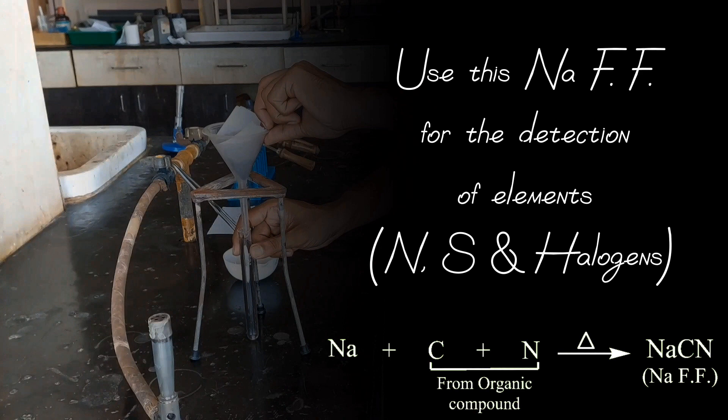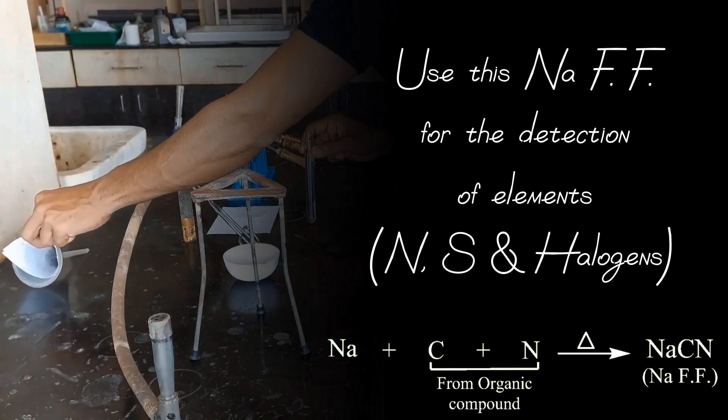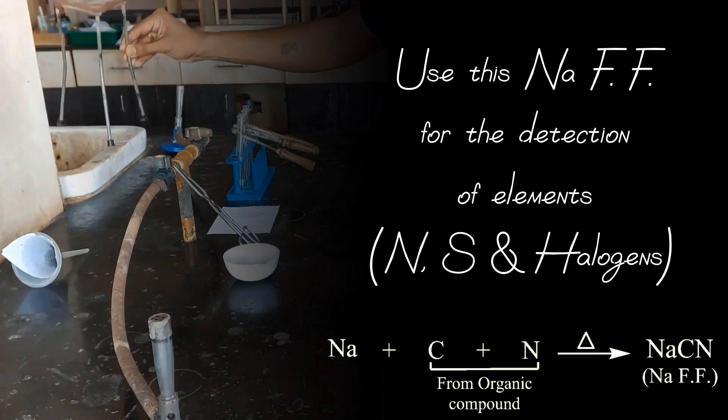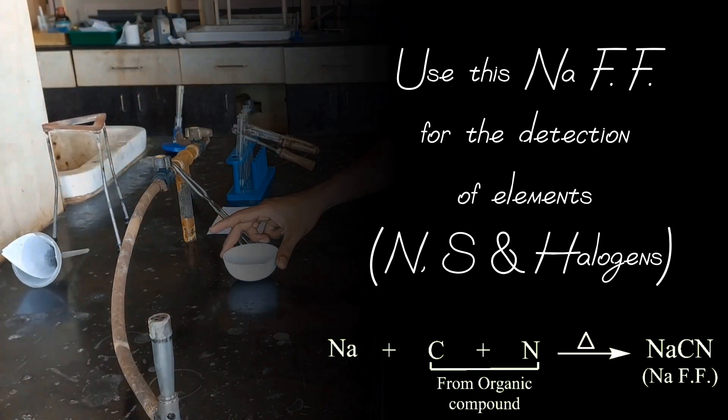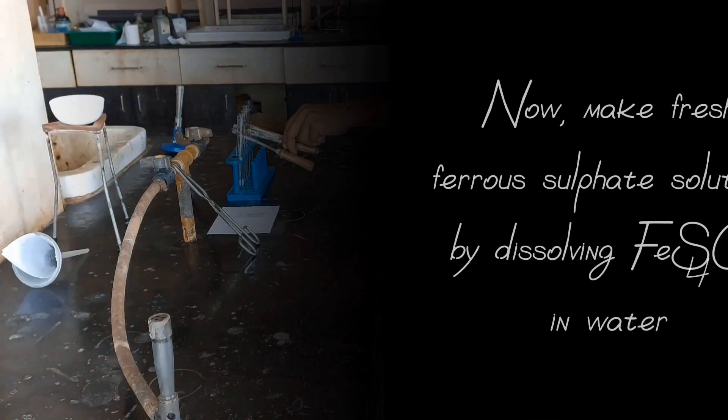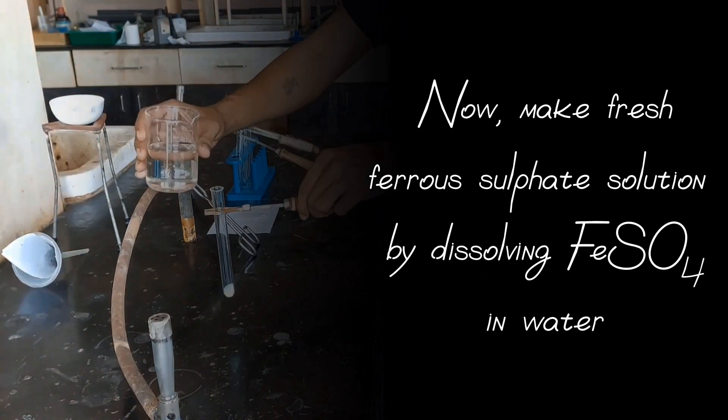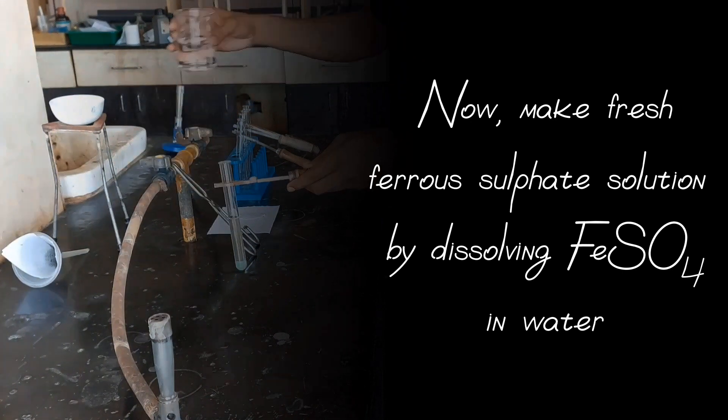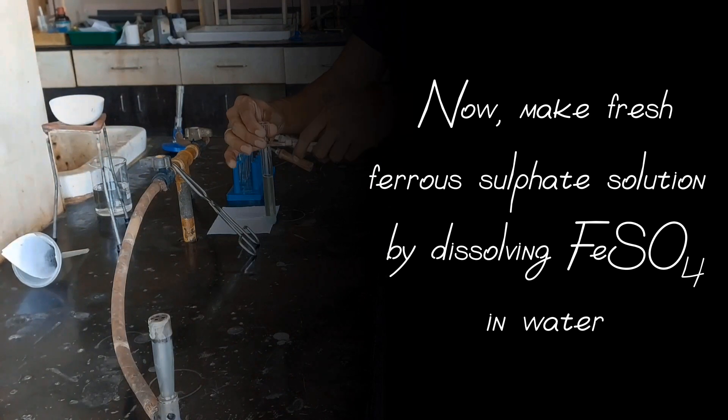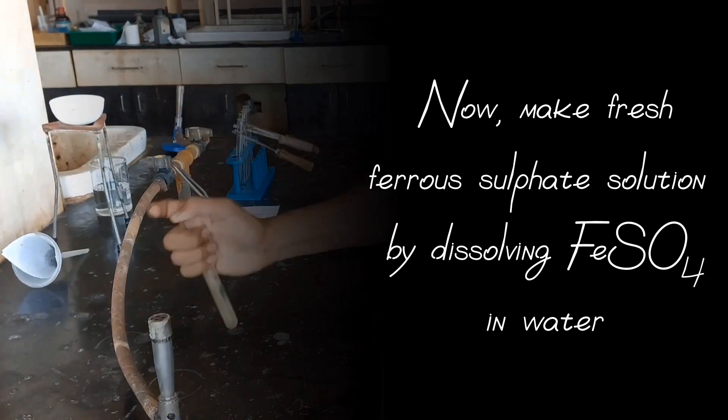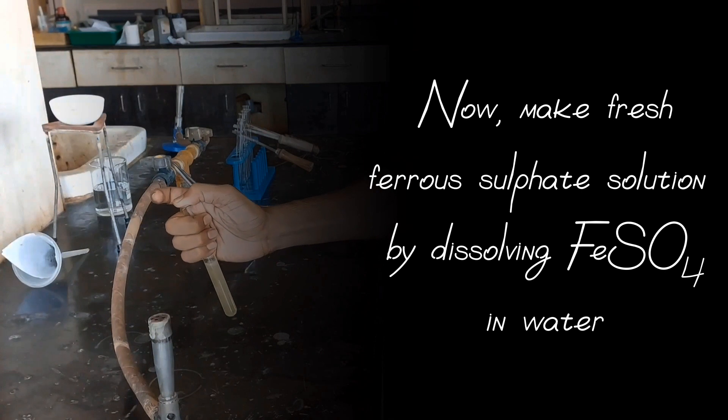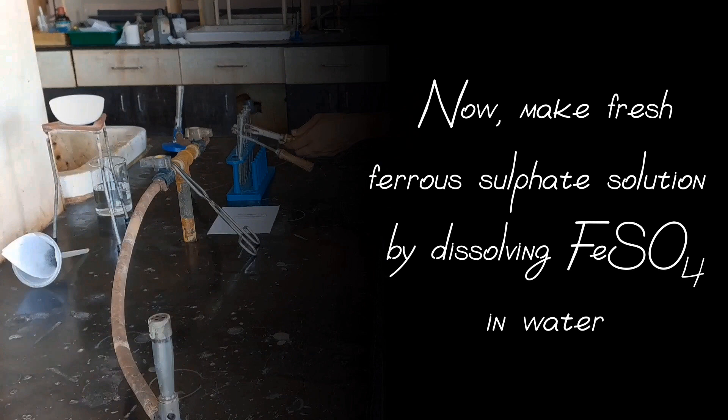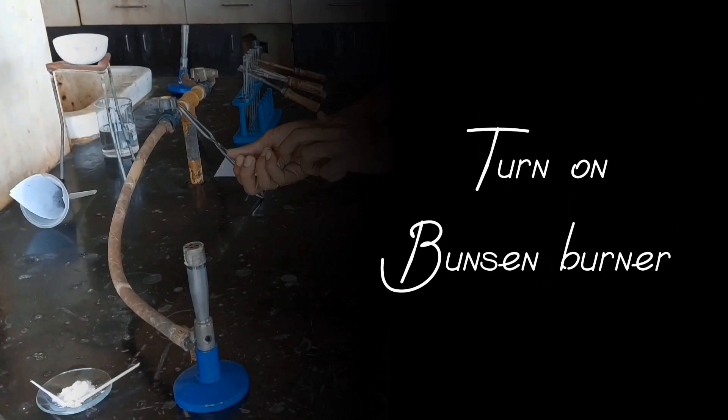Use this sodium fusion filtrate for the detection of elements like Nitrogen, Sulphur and Halogens. Now make fresh ferrous sulphate solution by dissolving ferrous sulphate in water. Turn on Bunsen burner.